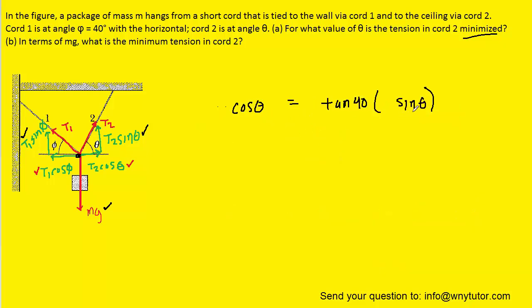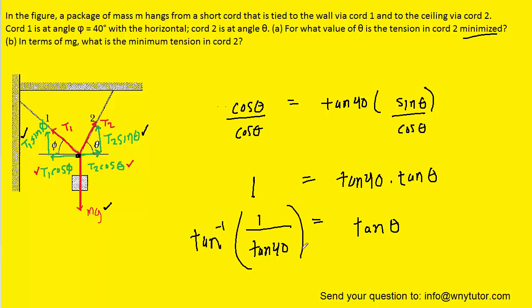In order to find theta here it looks like we're going to have to go back and divide both sides by cos theta. So notice on the left hand side we'll just have one and then sine over cosine is tangent of theta. Then we'll divide both sides by tangent of 40 so that we can isolate the tangent of theta. And then to find theta we'll take the inverse tangent of both sides of this equation and that's going to allow us to isolate theta.